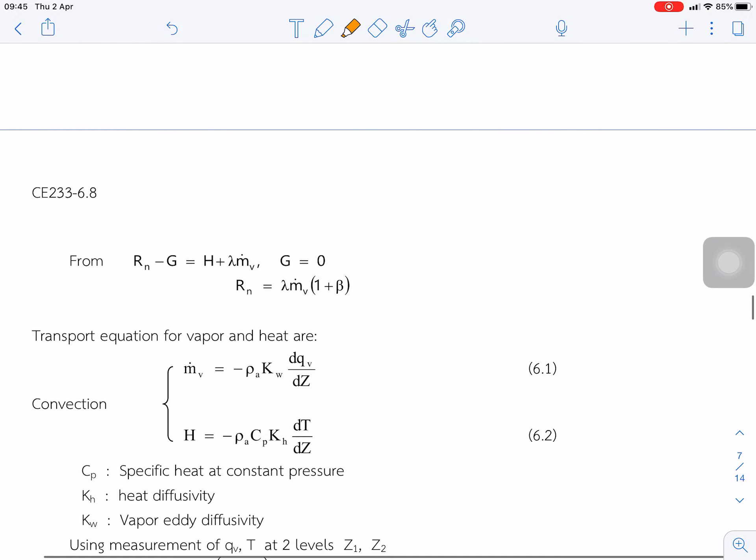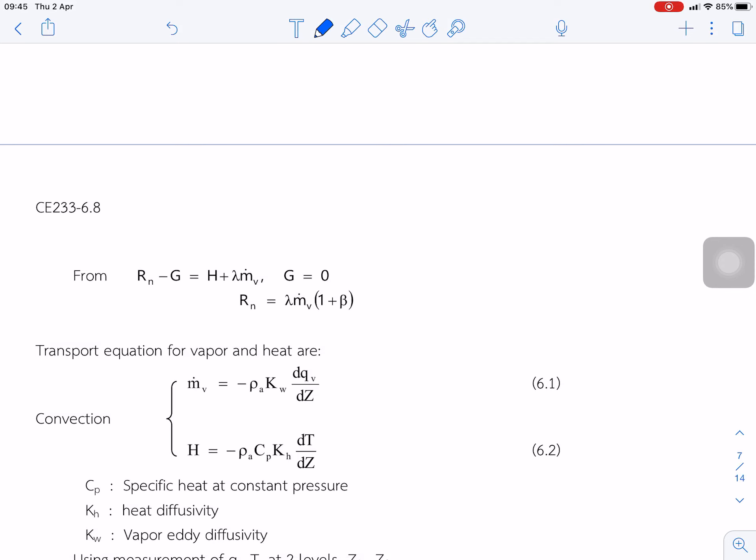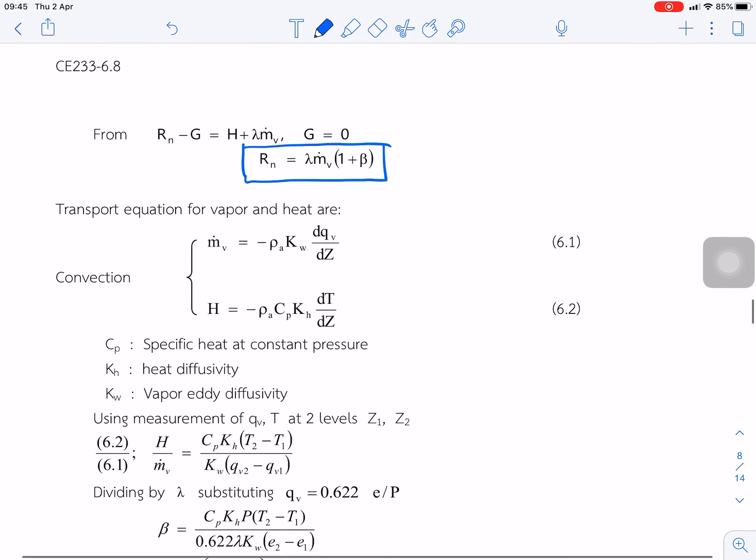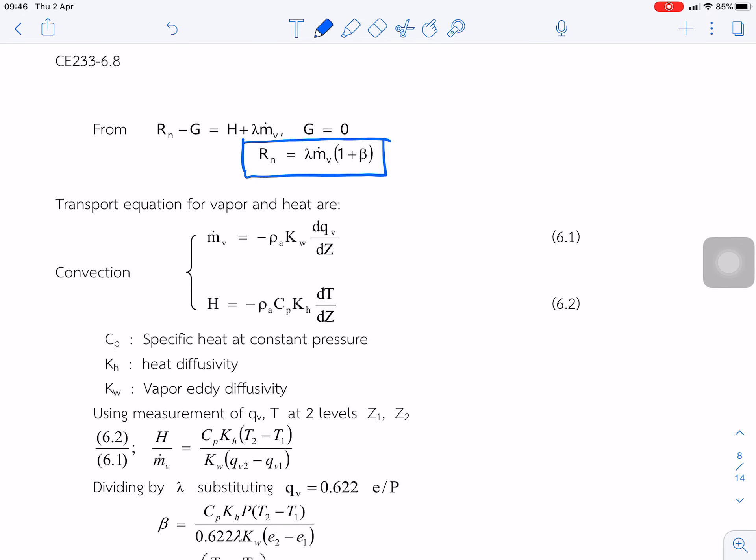Based on this, we can develop the equation of the energy balance equation using the term of the Bowen ratio. For the transport equation for vapor and heat, both come from convection. The above equation is from vapor and below is from heat.